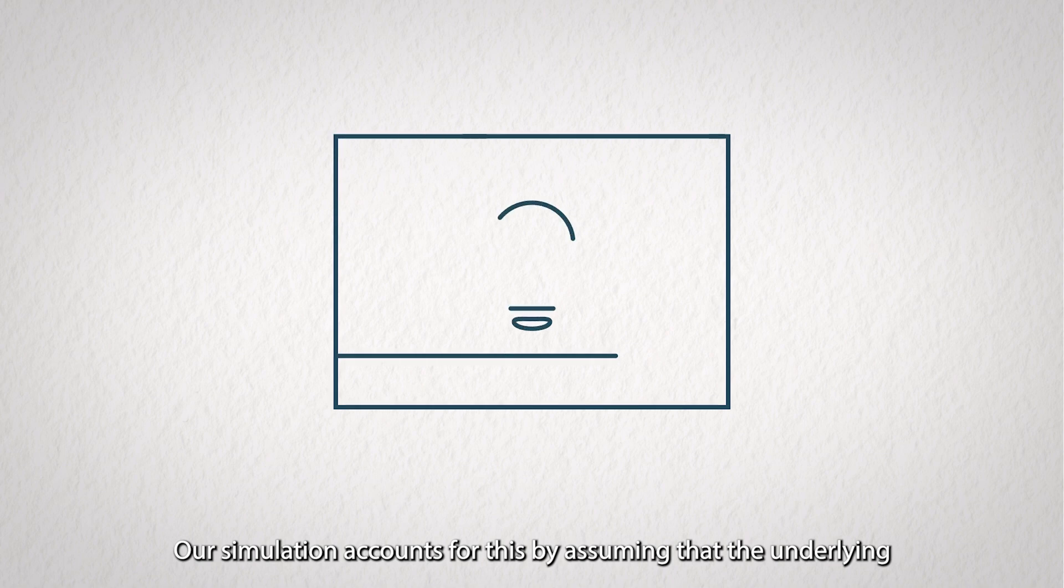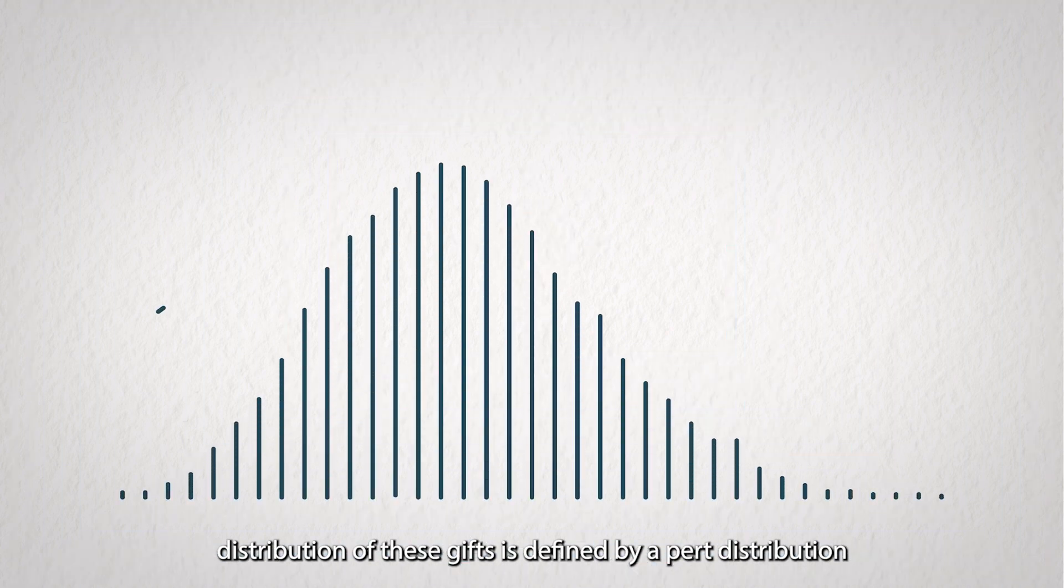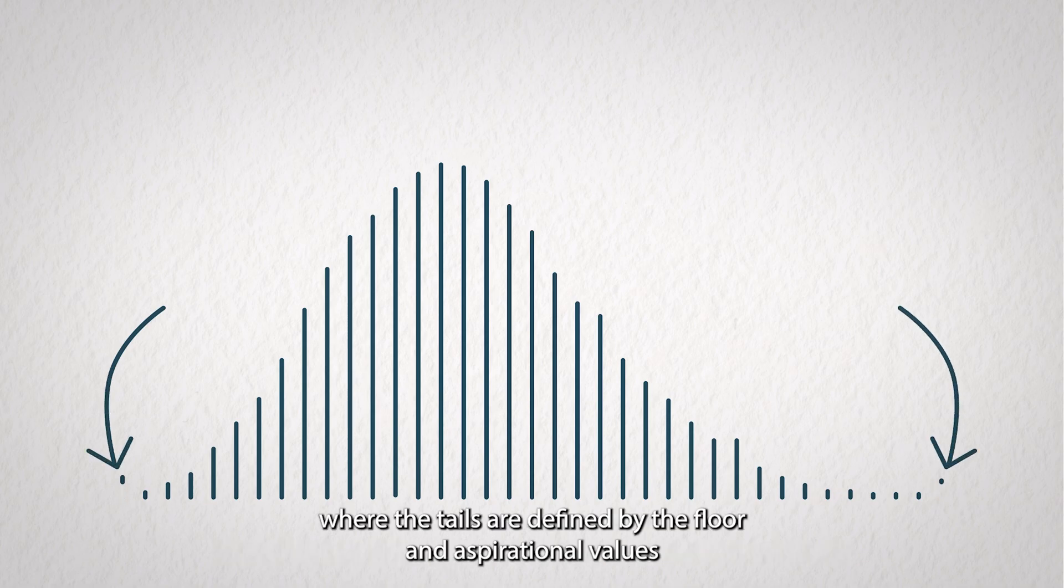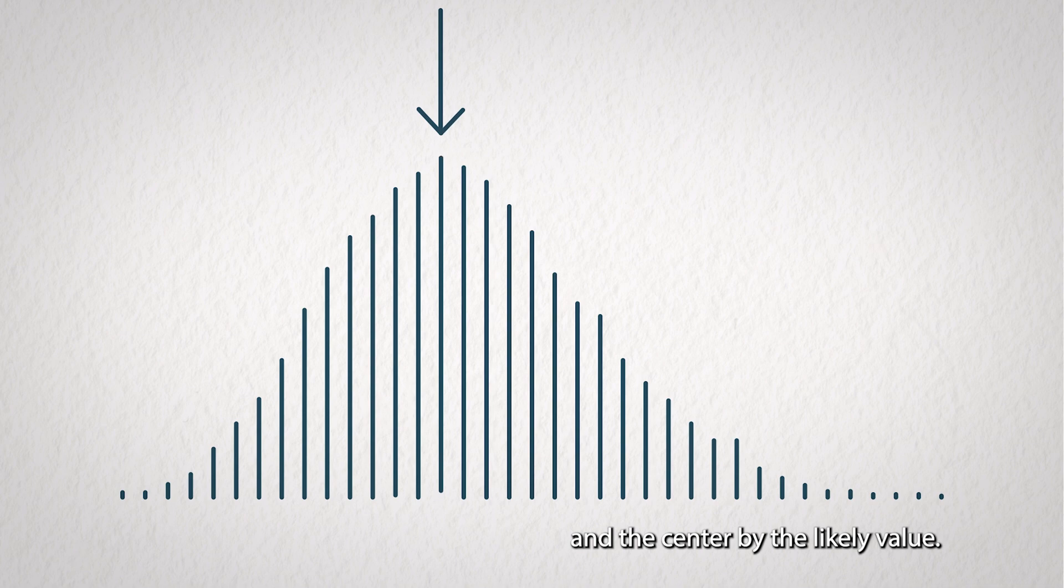Our simulation accounts for this by assuming that the underlying distribution of these gifts is defined by a PERT distribution, where the tails are defined by the floor and aspirational values, and the center by the likely value.